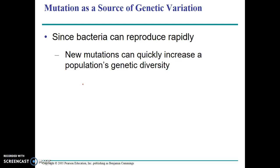Unlike us who take nine months to reproduce, bacteria can reproduce in a matter of minutes. As a result, because they're constantly replicating their DNA, their DNA polymerase makes more mutations in a given time period — not because it's less accurate, but because they're replicating more, so there's a greater chance that a mutation will occur. DNA polymerase makes mistakes about once every one million base pairs, and because bacteria replicate so frequently, those mistakes accumulate faster.